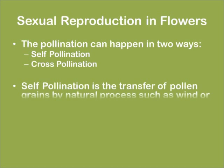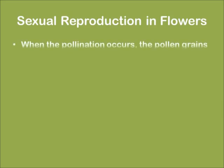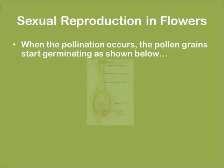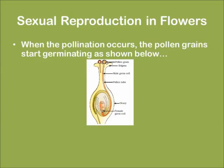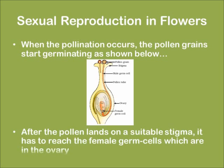Self-pollination is the transfer of pollen grains by natural processes such as wind or insects. Cross-pollination is the transfer of pollen grains through a manual method between two different flowers. The pollen grain is present in the anther, whereas the egg cell is enclosed in the ovary. When pollination occurs, the pollen grains start germinating as shown below.